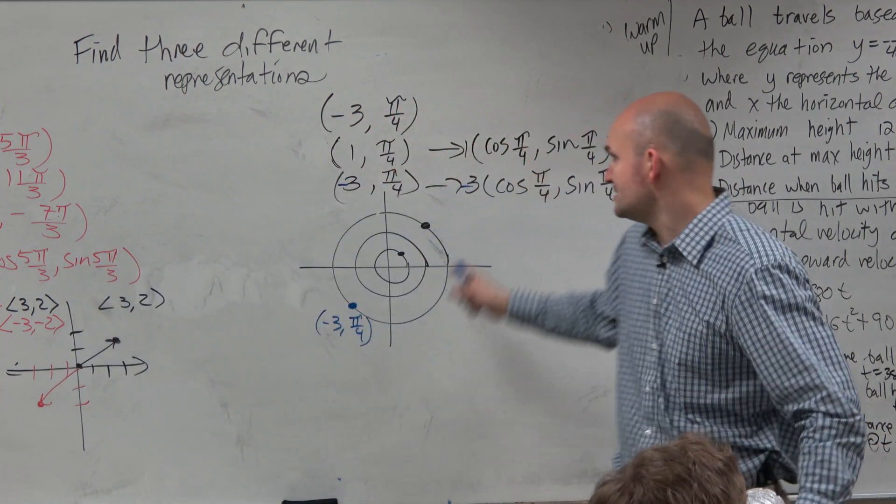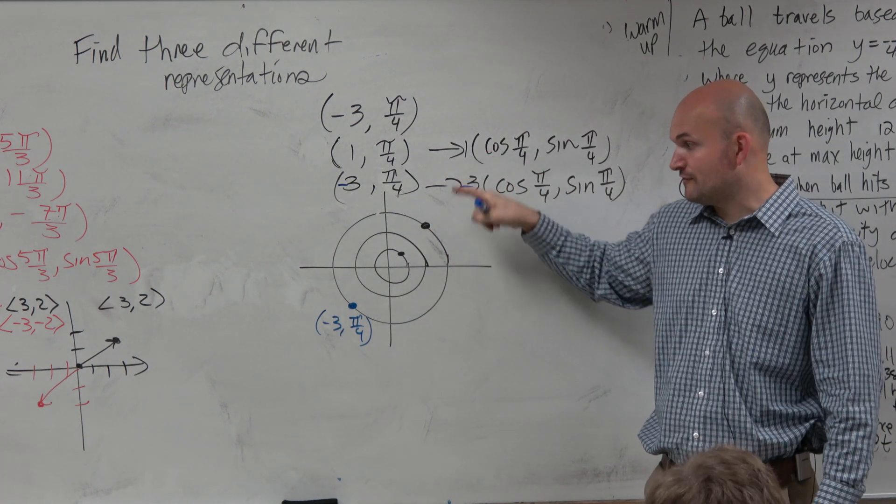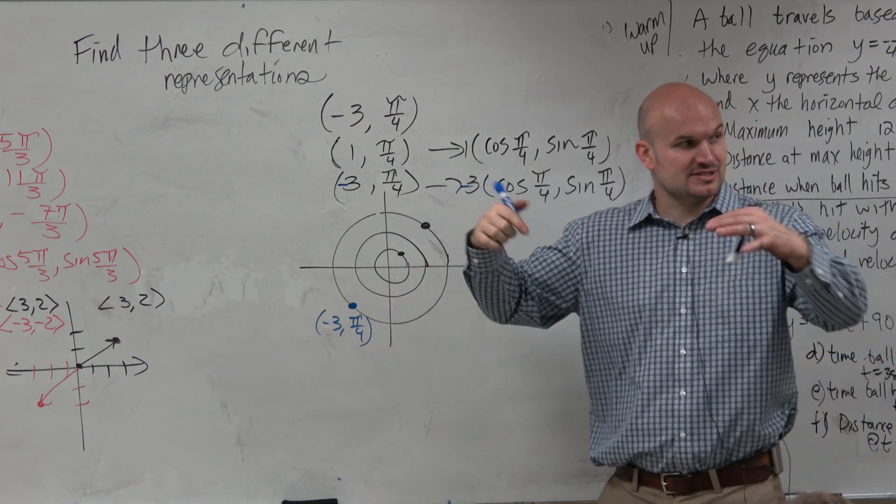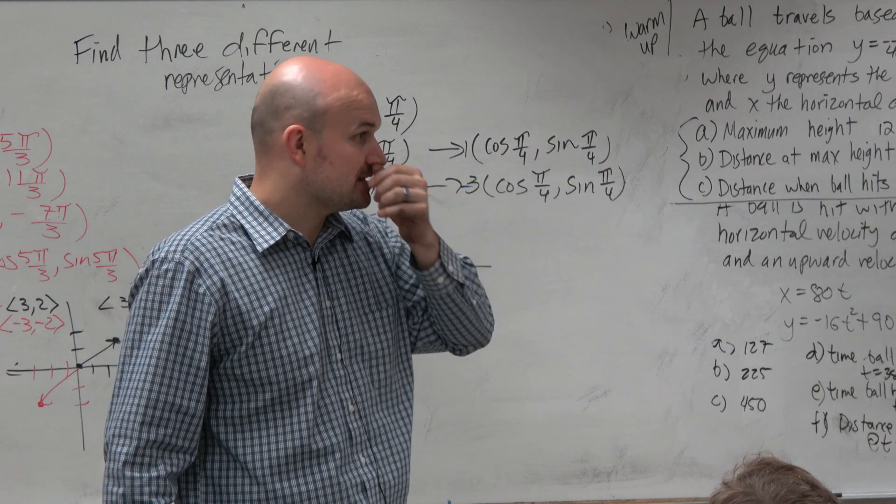That's where the point is. The point's not there. That's positive 3 π/4. Negative 3 π/4 is down there. So you've got to understand that negative is a reflection about the origin. That's basically all that is doing.